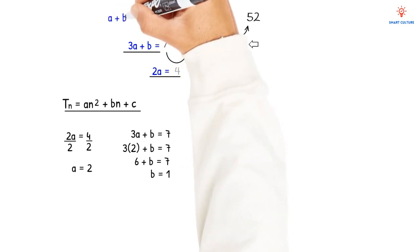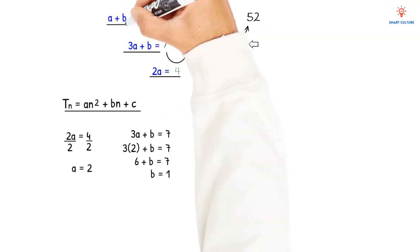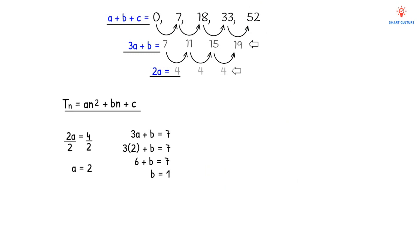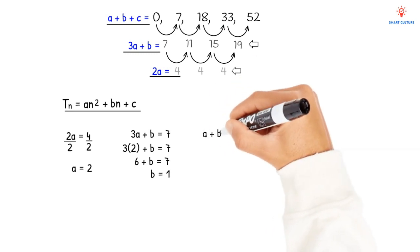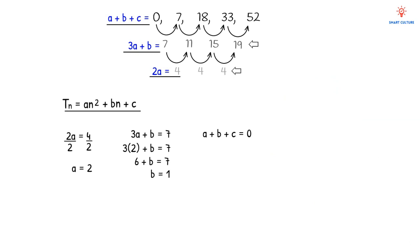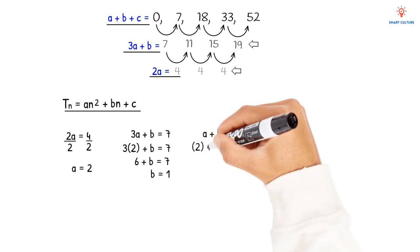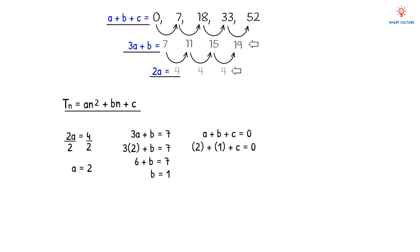Now we want to determine the value of c. The rule is that a + b + c always equals the first term in a quadratic sequence, and here the first term is 0. So: a + b + c = 0. With a = 2 and b = 1, we have 2 + 1 + c = 0, so 3 + c = 0, meaning c = −3.